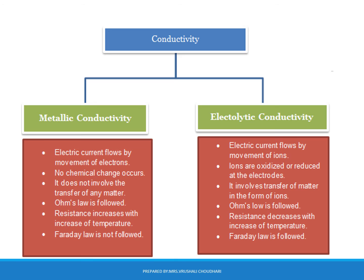In metallic conductors, there is no transfer of metal — the metal remains as it is after conductivity. While in electrolytic conductors, there is a transfer of matter in the form of ions, and their size will increase or decrease. Ohm's law is followed in metallic conductivity, and resistance increases with increase in temperature — as temperature increases, resistance increases and conductivity decreases. While in electrolytic conductivity, as temperature increases, resistivity decreases and conductivity increases. Faraday's laws are followed in electrolytic conductivity.